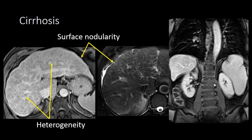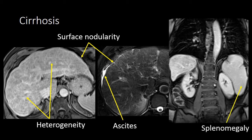Normally, the liver parenchyma is homogenous or uniform throughout. We can also identify, in certain patients, ascites, which indicates portal hypertension. And we can also evaluate the spleen for splenomegaly, which is another secondary sign of portal hypertension.